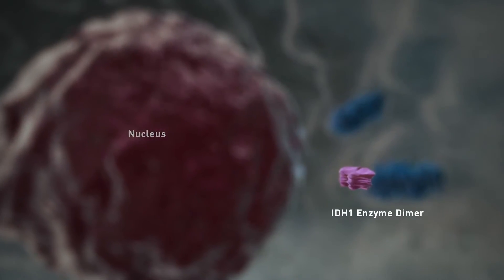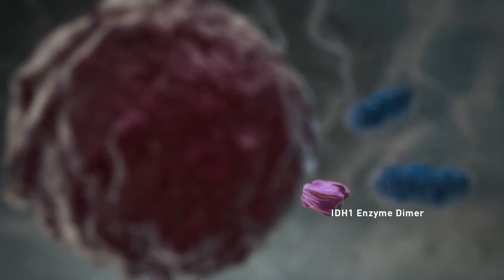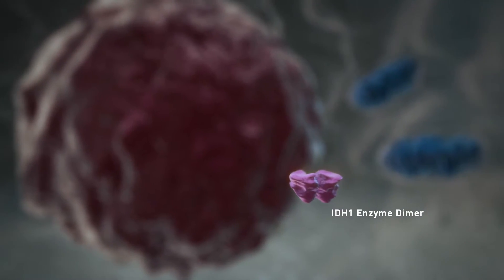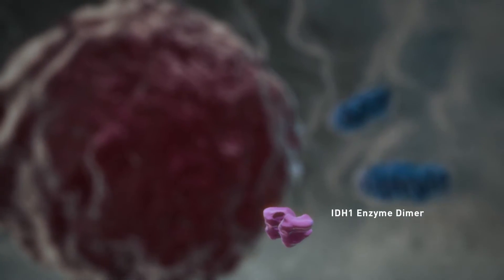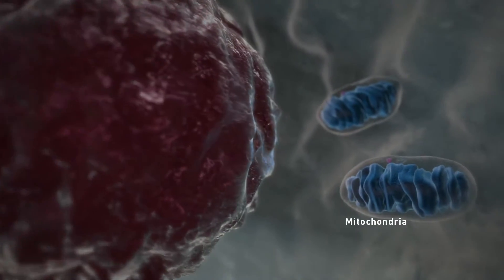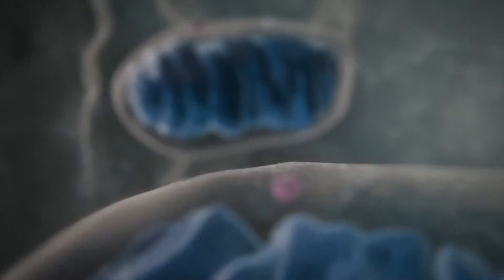In normal cells, IDH enzymes facilitate the cell's energy production from glucose and other metabolites. IDH1 localizes to the cytoplasm, IDH2 to the mitochondria.